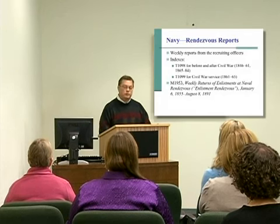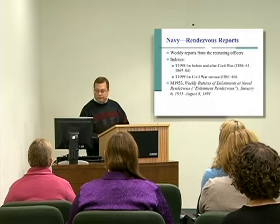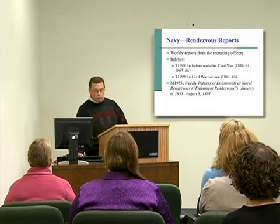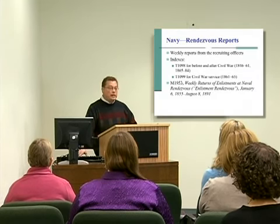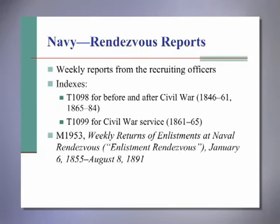The Navy equivalent of the registers of enlistments were the rendezvous reports. These were the weekly reports compiled by recruiting officers in the Navy. The records available begin with the Mexican War and go to the early 1890s. There are two separate indexes available for the rendezvous reports, both on microfilm. Publication T1089 or T1098 includes rendezvous reports before and directly after the Civil War, from 1846 to 1861 and from 1865 to 1884. The other index specifically covers Civil War service in microfilm publication T1099, covering 1861 to 1865. The actual weekly rendezvous reports are available on microfilm in publication M1953, Weekly Returns of Enlistments at Naval Rendezvous, from January 6, 1855 to August 8, 1891.